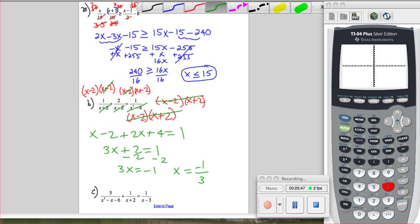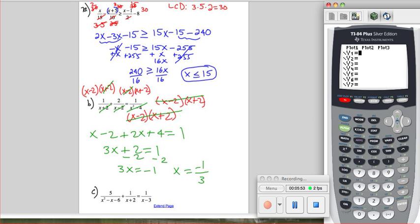And I wanted to show you this on the calculator. If you press y equals, and under y1 you put 1 divided by parentheses x, the x button is next to the green alpha key, plus 2, close parentheses, and then plus 2 divided by parentheses x minus 2.